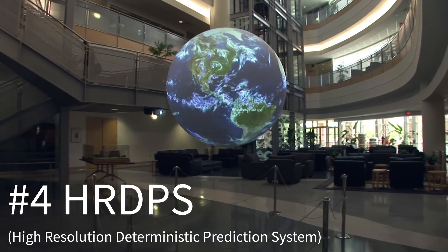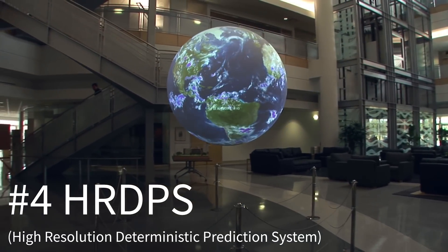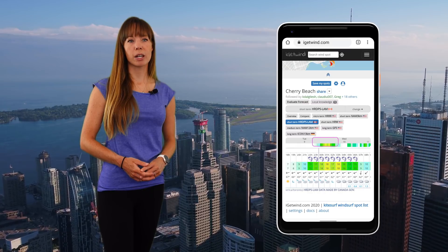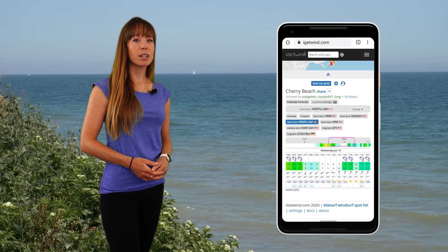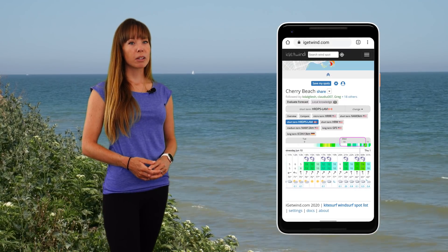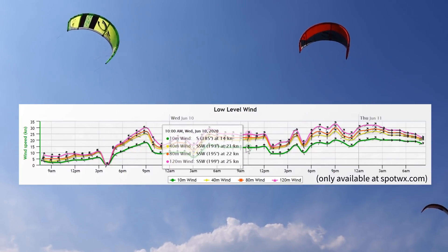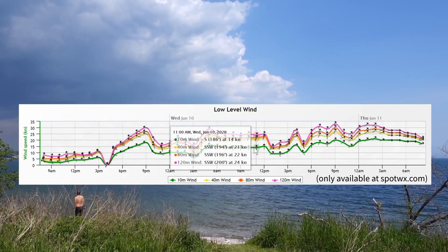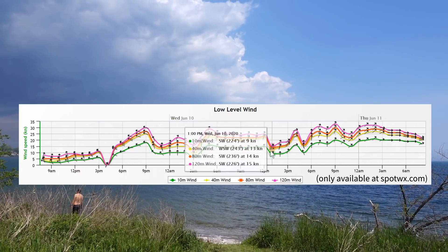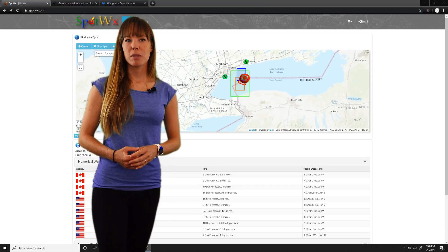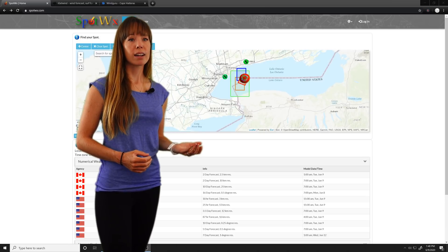Number 4: HRDPS, which stands for High Resolution Deterministic Prediction System. This is a new Canadian short-term model covering most of North America. It's run four times per day, has a high resolution of two and a half kilometers, and displays a forecast in hourly time slots for 48 hours into the future. This model is at least as accurate as our favorite NAM 3-kilometer model, if not more so, as it tends to predict thermal lake breezes. A super cool feature is that it outputs not only surface wind speeds, but also 40-meter winds, which can be useful for kite surfers using long lines. HRDPS is available for free at SpotWX, WindGuru, and iGetWind.